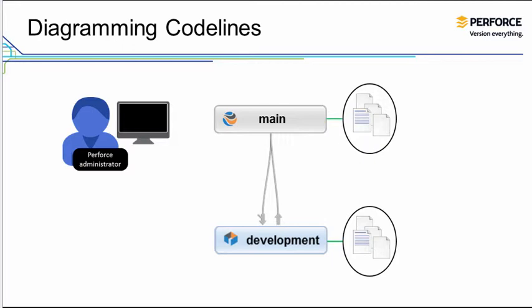Integration is the process of propagating changes from one stream to another. When you integrate, you might merge the changes in the source stream into the existing files in the target stream, or copy the files from the source stream to replace the files in the target stream.